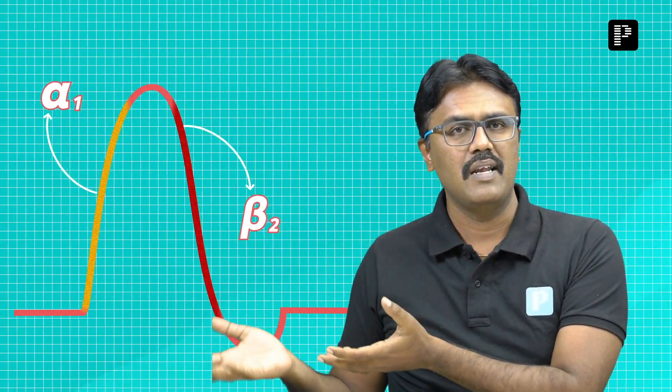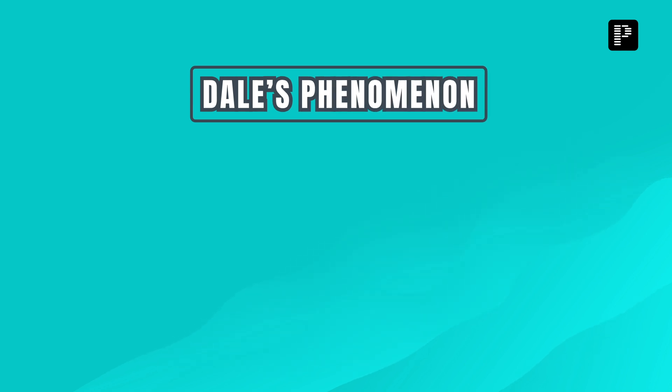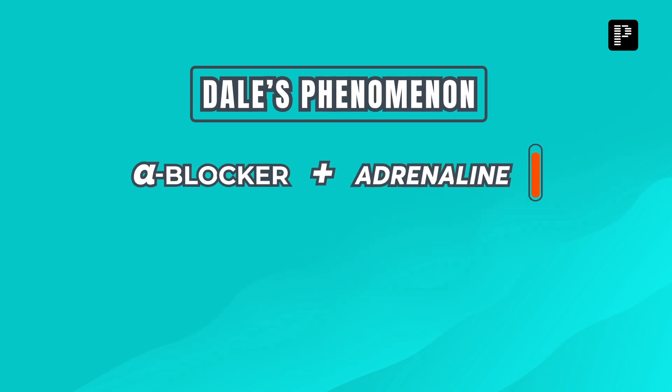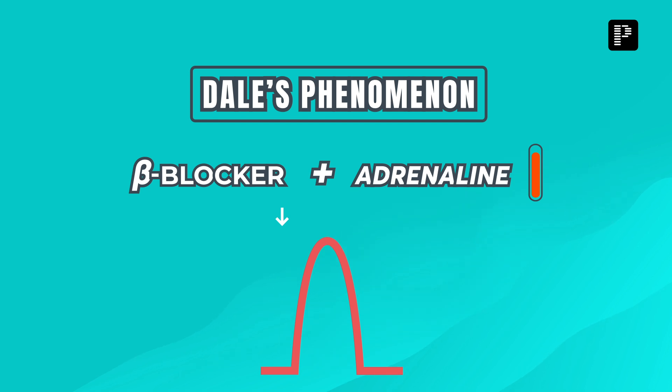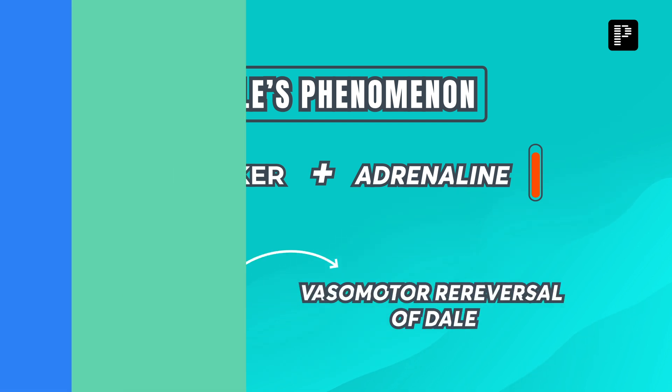The last letter is E — E for experiments in animals. When we give a high dose of Adrenaline, there is a rise in BP followed by a fall in BP. The rise in BP is due to alpha 1 action, and the fall in BP is due to Beta 2 action seen later. This is Dale's phenomenon. If you give an alpha blocker first and then give a high dose of Adrenaline, you see only a fall in BP. If you give a beta blocker first and then give a high dose of Adrenaline, since beta is blocked, you see only a rise in BP — this is called the Vasomotor reversal of Dale's phenomenon.